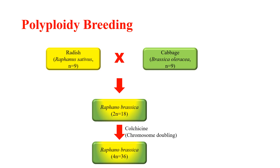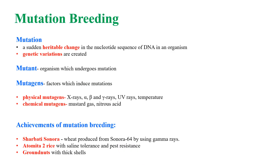Next is mutation breeding. Mutation is defined as the sudden heritable change in the nucleotide sequence of DNA in an organism. Mutation creates genetic variations. The organism which undergoes mutation is called a mutant. The factors which induce mutations are known as mutagens or mutagenic agents. Mutagens are of two types: physical mutagens and chemical mutagens.